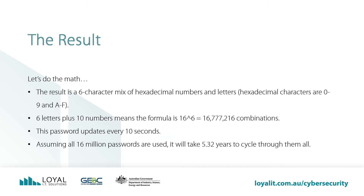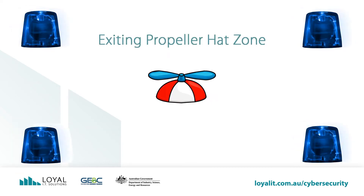Let's do the math on the result. The result is a six-character mix of hexadecimal numbers and letters. Hexadecimal characters are 0 to 9 and A to F. Six letters plus 10 numbers means the formula is 16 to the power of 6, which equals 16.7 million combinations. This password will update every 10 seconds. Assuming all 16 million passwords are used, it will take 5.32 years to cycle through all of them. Let's exit the propeller hat zone.